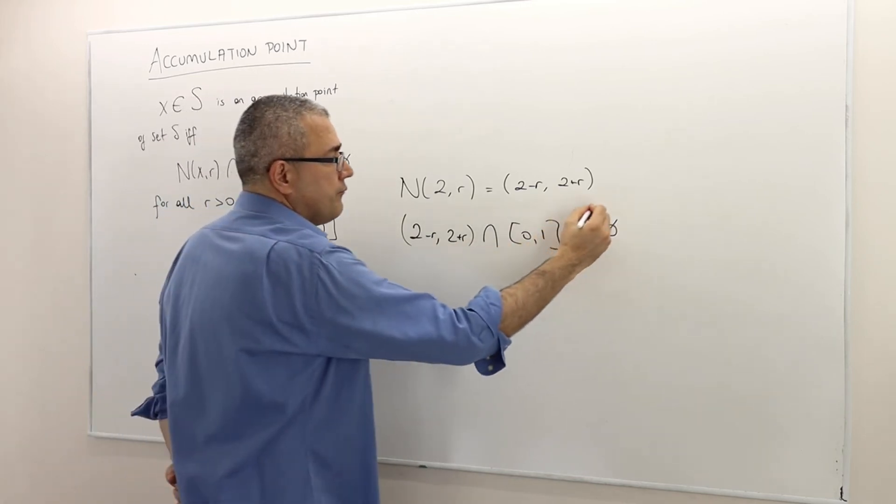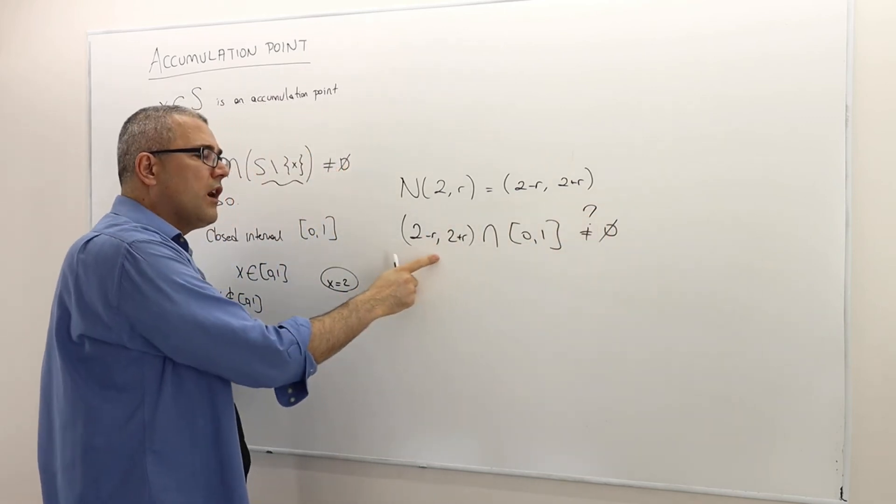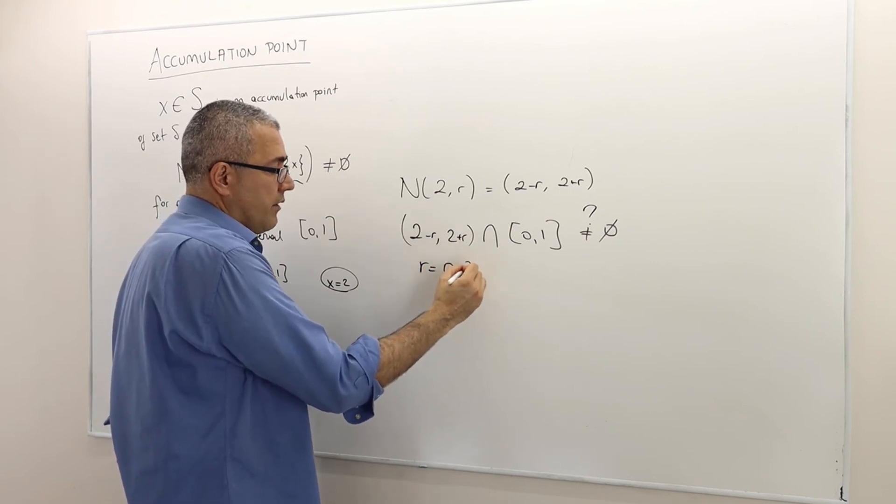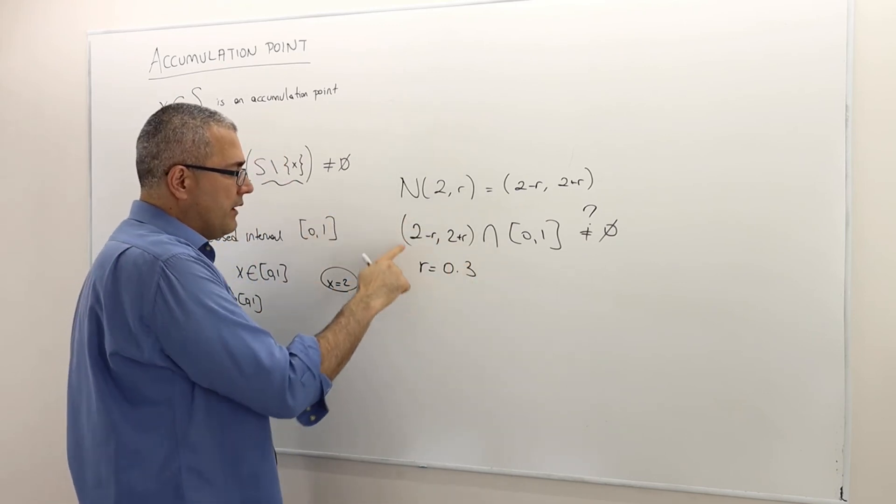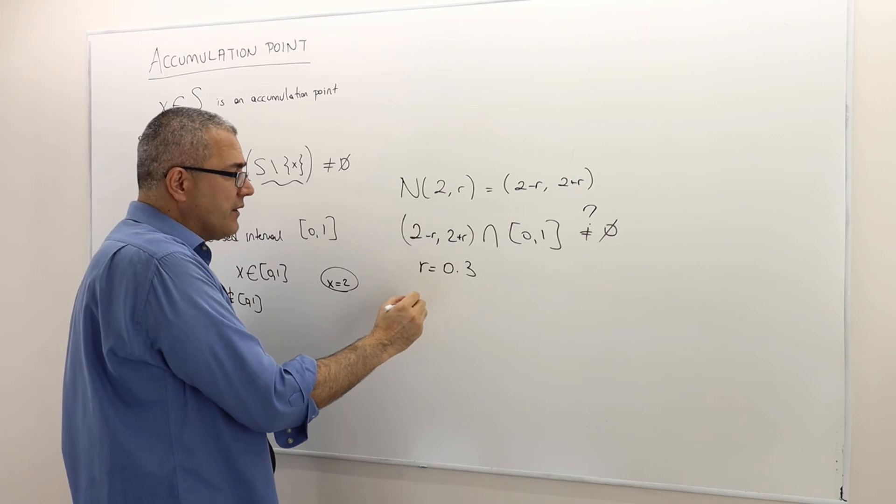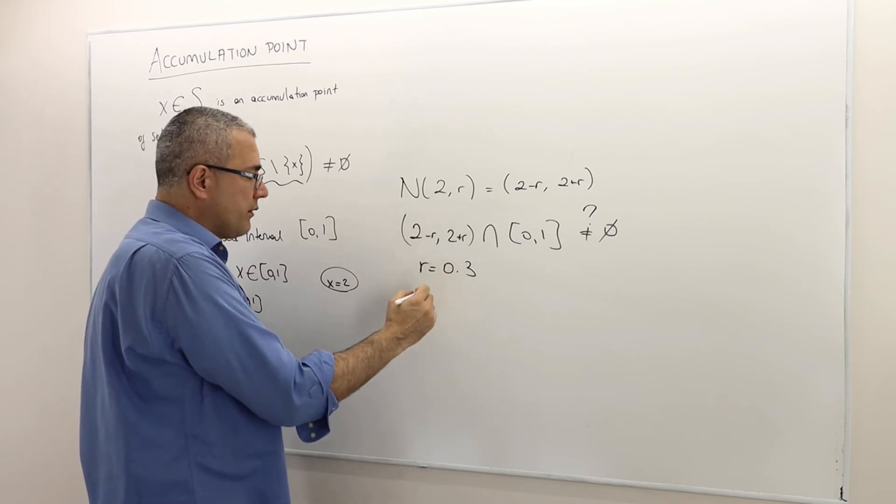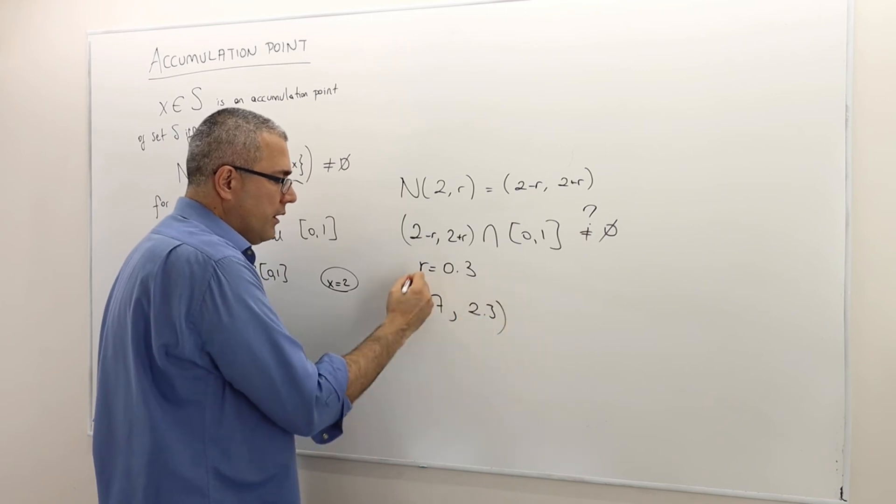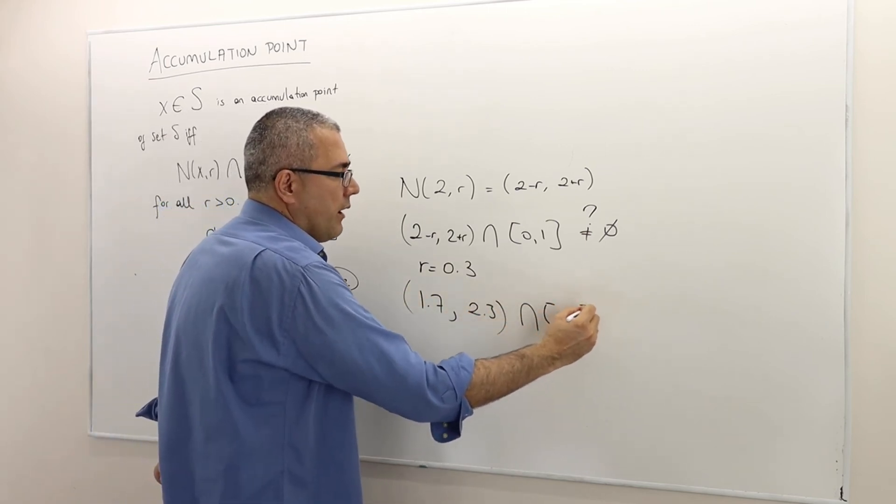Well, the thing is, if you choose R small enough, for example, R equals 0.3, that means this open interval is basically 2 minus 0.3, so it's like (1.7, 2.3). Intersection [0, 1]. Well, this is obviously empty.